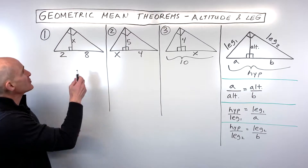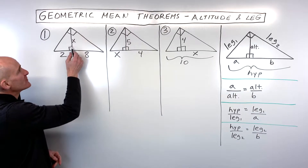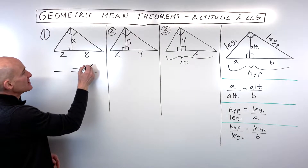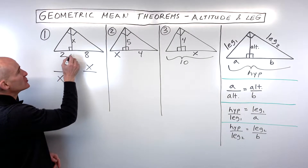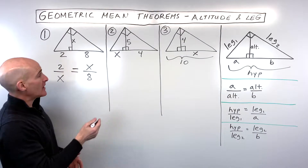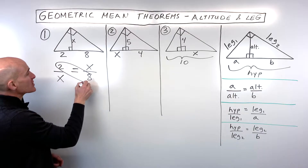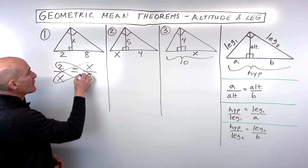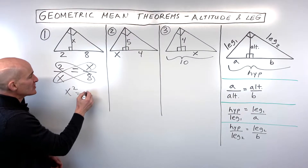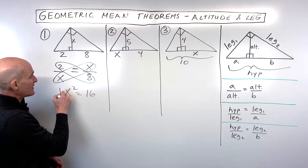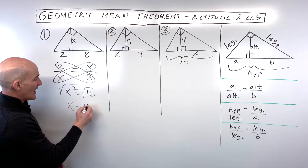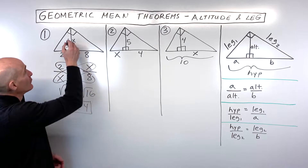For number one, here's our altitude in a right triangle. The altitude x is the geometric mean of the two parts of the hypotenuse that it splits into. Using the cross product, x times x equals x squared, which equals 2 times 8, which is 16. Taking the square root of both sides, the altitude x equals four units.